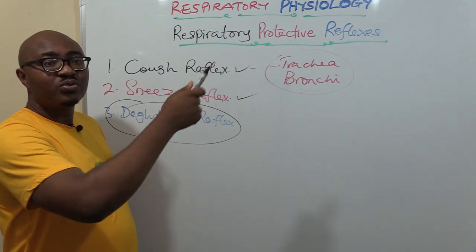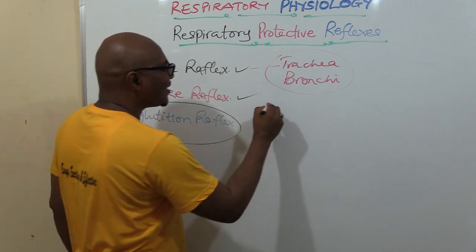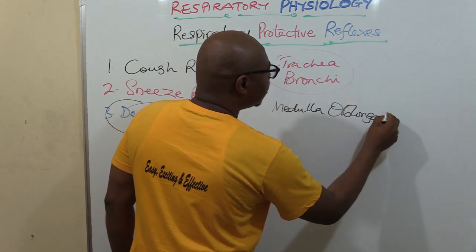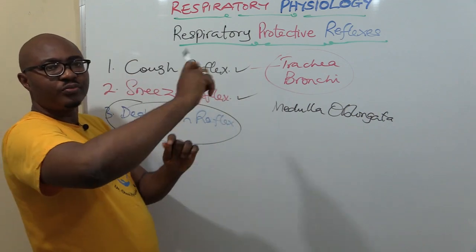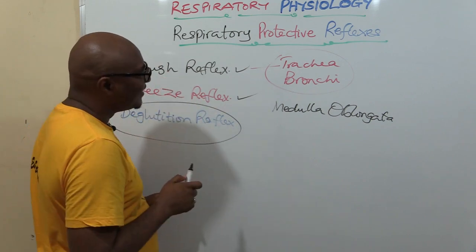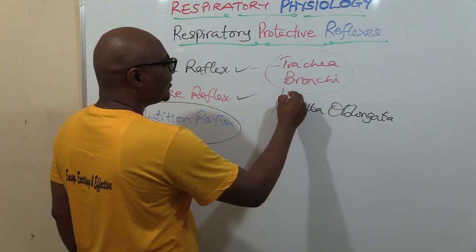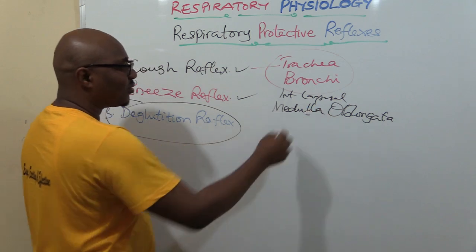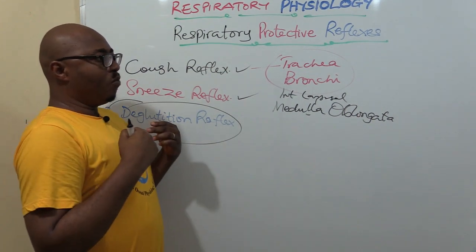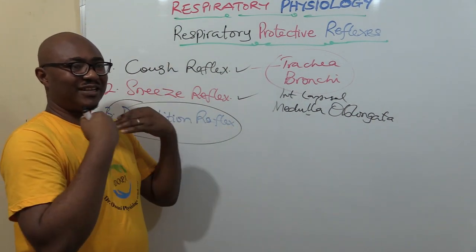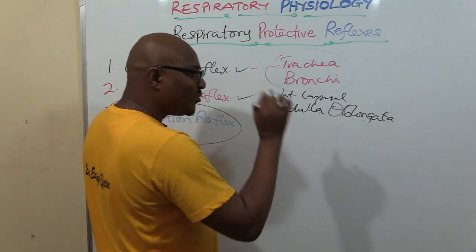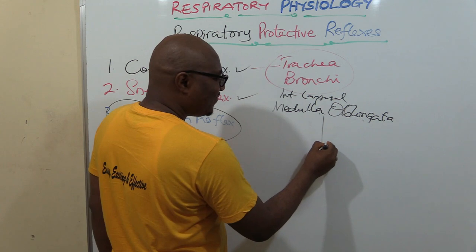Those receptors send a message to the control center located in the medulla oblongata. That message travels through the internal laryngeal nerve, which is a branch of the superior laryngeal nerve — that is the afferent nerve. The medulla oblongata interprets the message and determines that the body needs to cough out and forcefully expel the harmful foreign agents.